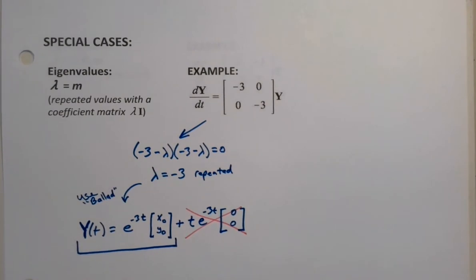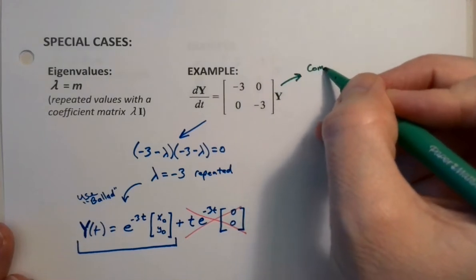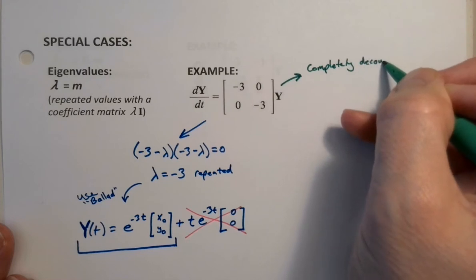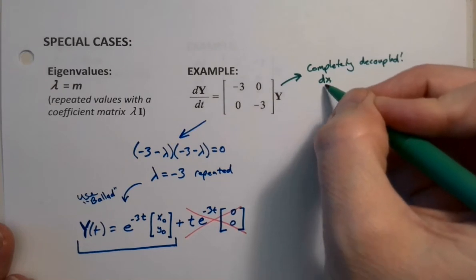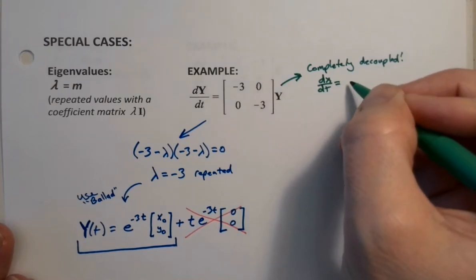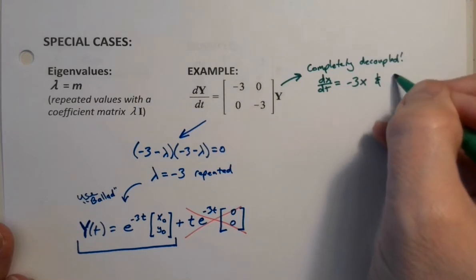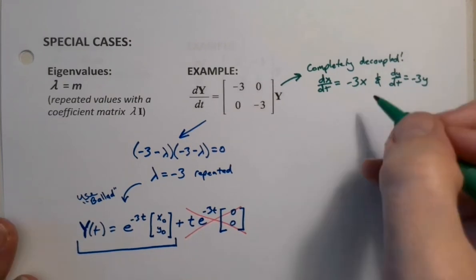Now, we could have done it another way as well, because if you might have spotted it, this is what we would call a completely decoupled system. Which means we really have two equations that we can solve completely separately. dx dt equals negative 3x and dy dt equals negative 3y. And those are pretty boring equations for us to solve,